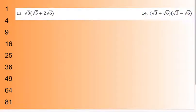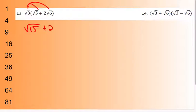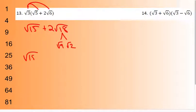Number 13: distribute and combine what's underneath. Square root of 3 times the quantity (square root of 5 plus 2 square root of 6) gives square root of 15 plus 2 square root of 18. Now √18 breaks into √9 times √2. You can't do anything with √15 — that stays. So 2 times 3 times √2 gives 6√2. Final answer: √15 plus 6√2.